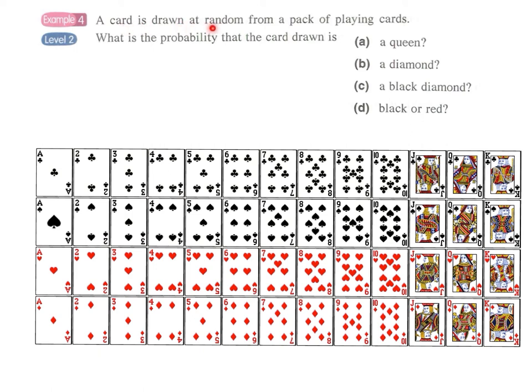Example 4, a card is drawn at random from a pack of let's say 52 playing cards. What is the probability that the card drawn is a queen, a diamond, a black diamond, black or red?